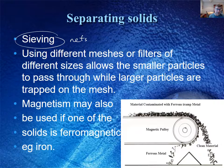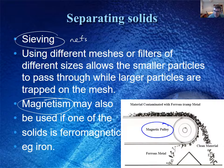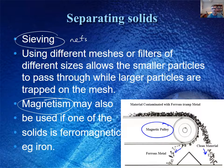Sometimes one of the other properties of a solid can make it easier to separate. One of those important properties is magnetism — certain types of solids are magnetic. Therefore a magnetic pulley, like the one you can see in the diagram here, can be used by drawing out those substances which are magnetic. They are retained by the pulley just a little bit longer until they fall under gravity, whereas non-magnetic material falls away earlier.